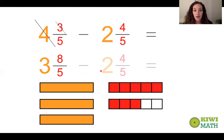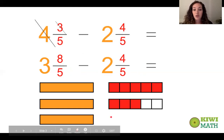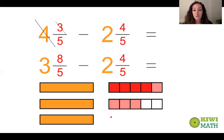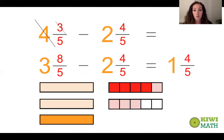Now we can subtract the two and four fifths. If we subtract the four fifths, we're left with four fifths. And three minus two is one. So our answer is one and four fifths — one whole plus four fifths.